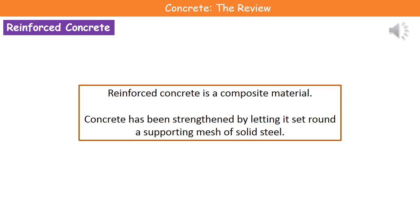One thing we can do to make concrete more useful is to create reinforced concrete, which is known as a composite material. It takes properties from the two different materials it's made from. The concrete is strengthened by letting it set around a supporting mesh of solid steel. If you've ever looked at construction sites, you may have seen a grid of metal going in before they pour the concrete over it — that's the reinforced concrete being made.